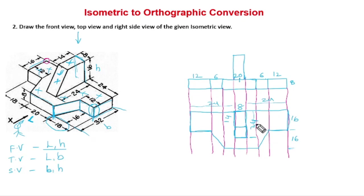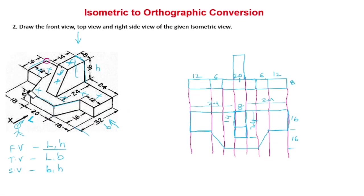Next, coming to the side view — the right side view. Looking in this direction, first we can see the full shape: the height is 8mm. So we can see an 8mm by 16mm block in the right side view.